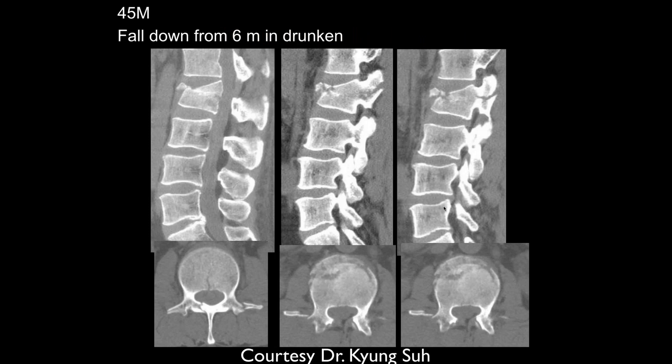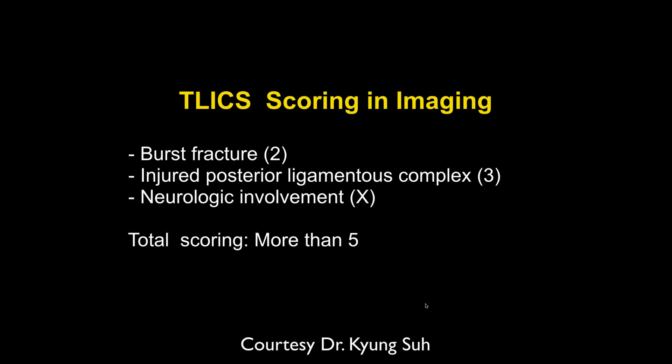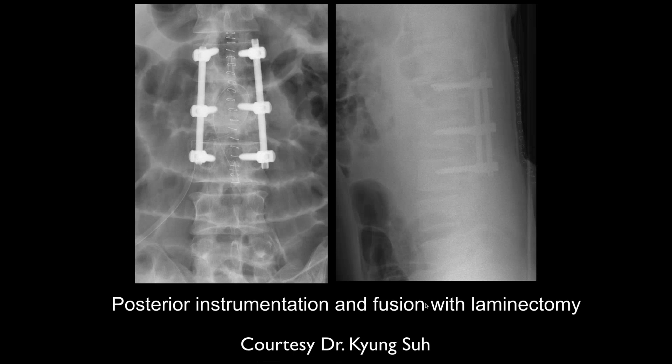Thomas: 45-year-old, fall from 6 meters in a drunken event. This would qualify as a chance fracture — compression anteriorly and posterior elements are involved. On the MR scan there's compression of the anterior vertebral body and more of a distractive injury posteriorly, with significant compression involving the neural structures and no CSF around them. The patient went to surgery and here's the post-op appearance. You can also do injury scoring here.